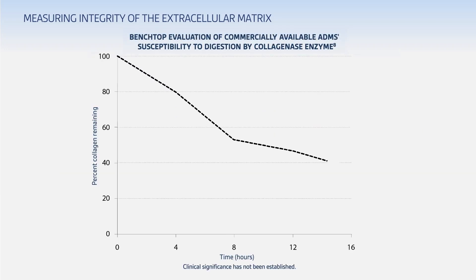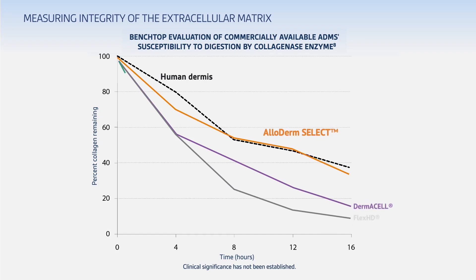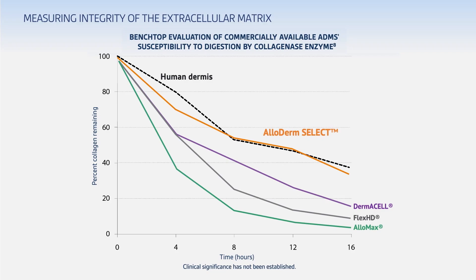The results of a biochemical assay bear this out in benchtop testing. The dotted line shows the normal rate of digestion of native human dermis via collagenase. We can see how the digestion rate for Alloderm, with its intact structure, is very similar. The same cannot be said for the other ADMs we looked at — this study showed that these matrices were damaged, leading to a faster rate of digestion by collagenase enzyme.